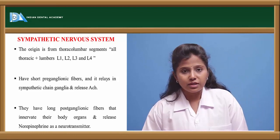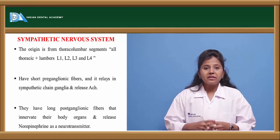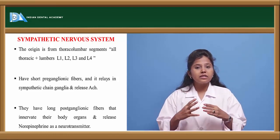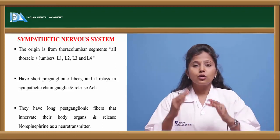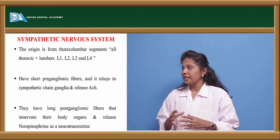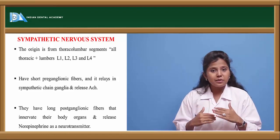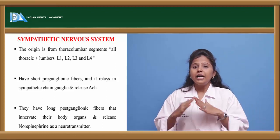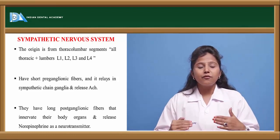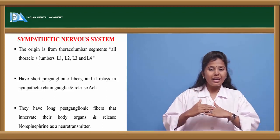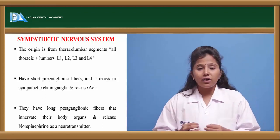The sympathetic nervous system originates in the thoracolumbar region — the segments in the thoracic region as well as segments in the lumbar region of the spinal cord. It involves all segments of the thoracic region, but in the lumbar region, only L1 to L4 segments are involved. The sympathetic nervous system has short fibers.